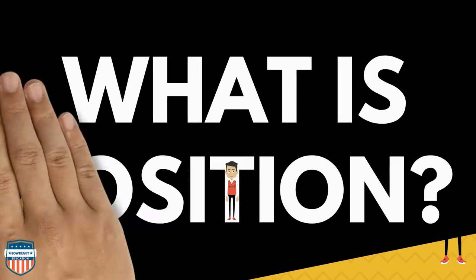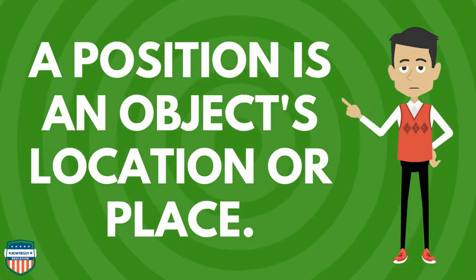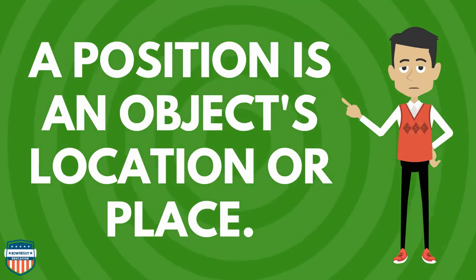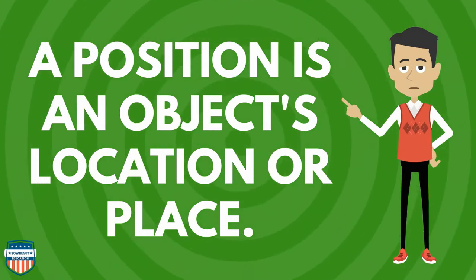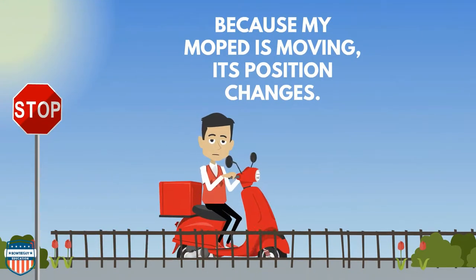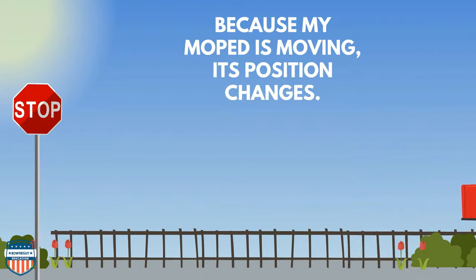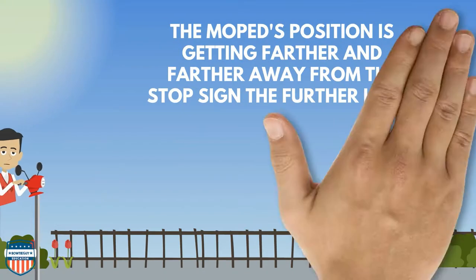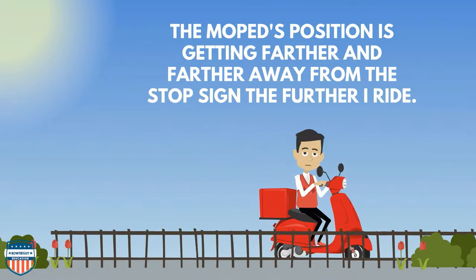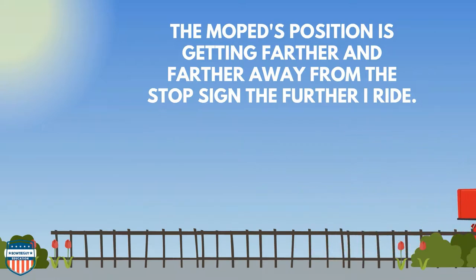What is a position? A position is an object's location or place. Because my moped is moving, its position changes. The moped's position is getting farther and farther away from the stop sign the further I ride.